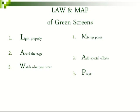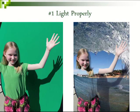The first law is light properly. It's important to light the background as well as the foreground of what you're photographing on a green screen. For example, this shadow is caused by the background not being lit properly, and it does not turn out good on the final image. If you also don't light the background, you'll get wrinkles. The girl is also not properly lit, and you get green screen spillage on her shoulder. You also need to light the subject from the back, called backlighting, in order to give the person a good outline.